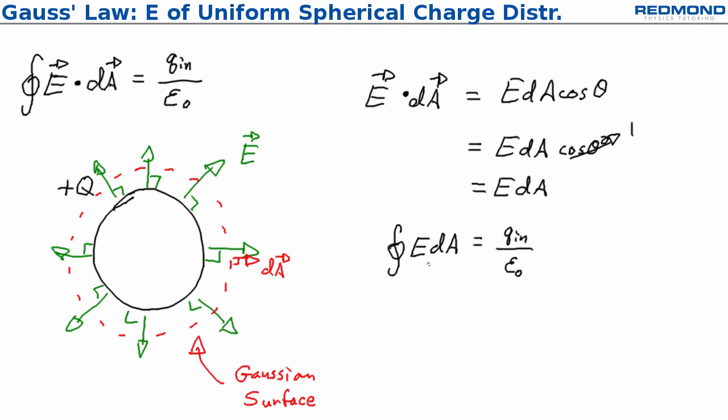The next step is to look at how we can simplify and solve the integral. For every point on the Gaussian surface, the electric field is going to have the same magnitude, which means that the magnitude of E is constant, and I can pull that out of the surface integral. So we get E times the surface integral of dA equals Q enclosed over epsilon naught.